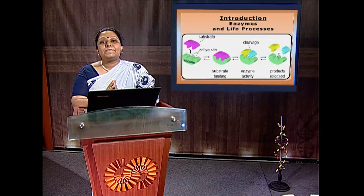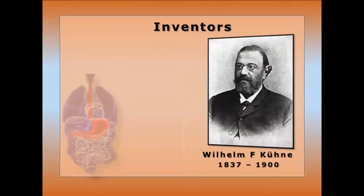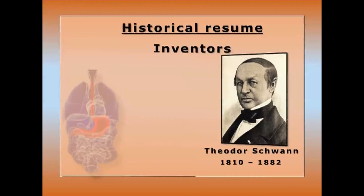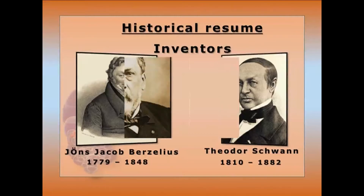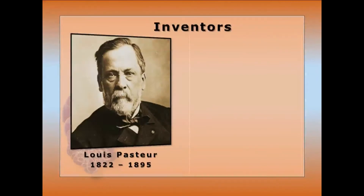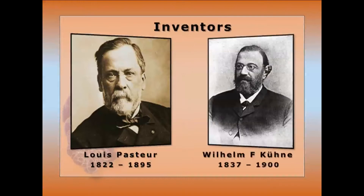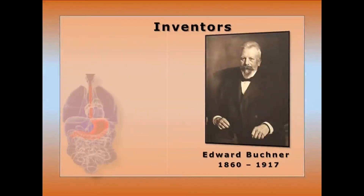The enzyme was first named as ferments, then Kühne named it as enzyme. In the historical regime: Theodosius first found pepsin in gastric juice. In 1837, J.J. Berzelius found the catalytic function of diastase. In 1857, Louis Pasteur found the catalytic action of unorganized ferment like emulsine and organized ferment like leavening yeast cells. William Kühne named the unorganized ferment showing catalytic activity as enzyme. Buchner in 1897 found zymase as the catalyst for alcoholic fermentation.